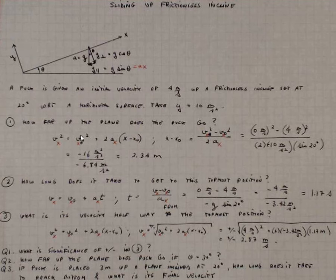v sub x squared is equal to v sub x not squared plus 2 a sub x times the displacement in the x direction. Solving for the displacement, that's v x squared minus v x not squared over 2 a sub x.